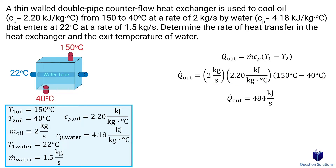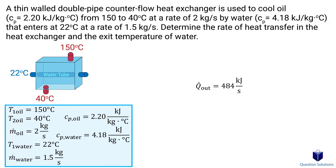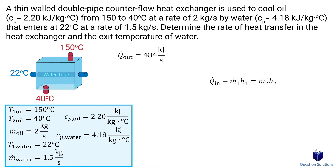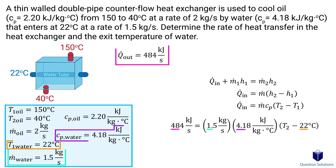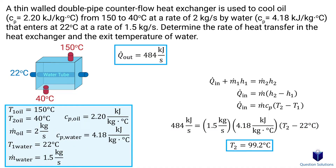The heat lost by the oil is absorbed by the water. Now taking the water tube as our system, we have heat input — the same heat transferred from the oil — plus one inlet and one outlet with equal mass flow. Simplifying gives the same form of equation. We plug in the values — noting there is now a heat transfer into the water equal to the heat lost by the oil — and solve for the final temperature of the water.